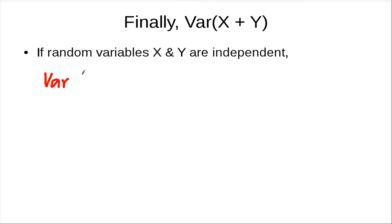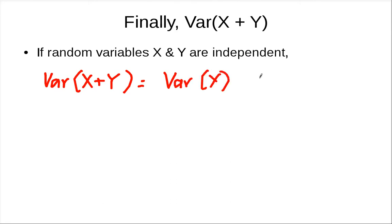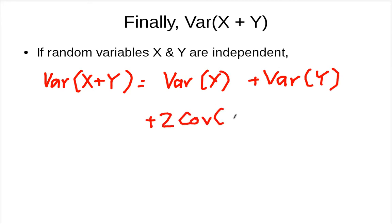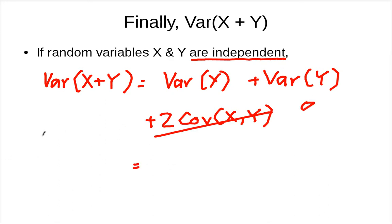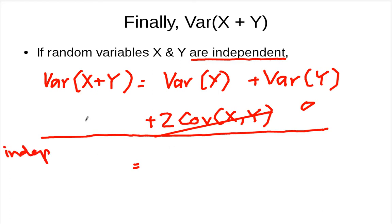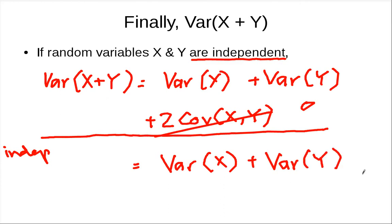We can now plug this in. We showed that the variance of x plus y equals the variance of x plus the variance of y plus twice the covariance of x and y. In the case when x and y are independent, the covariance is zero, so the variance of x plus y is simply the variance of x plus the variance of y. This is what we claimed previously in one of the slides on binomial random variables. Thank you.